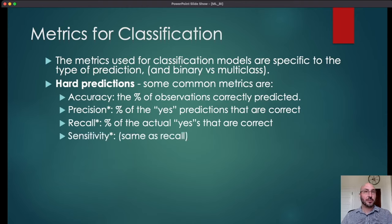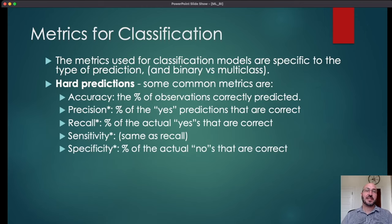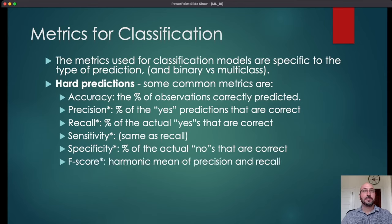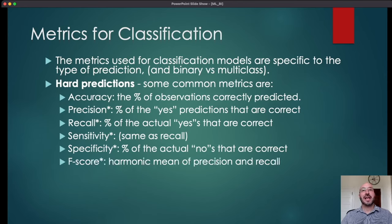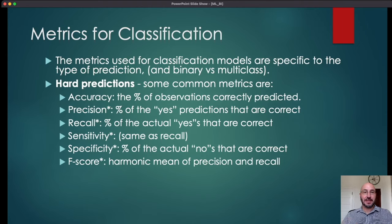Sensitivity is another word for recall — the exact same definition. Specificity is different: it asks what percentage of the actual noes were correctly labeled as no. Finally, there's the F-score, which is the harmonic mean of precision and recall. It's a way of summarizing the precision-recall trade-off in one number, favoring cases where precision is close to recall while preferring both numbers to be as large as possible.